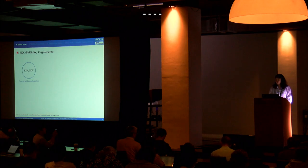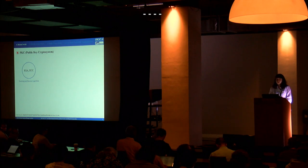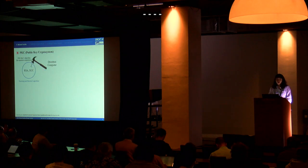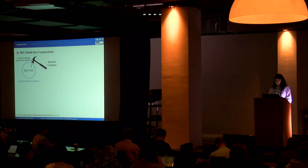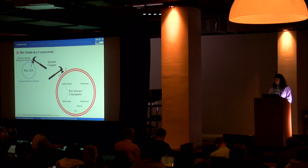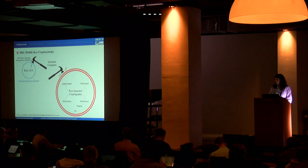The security of public cryptosystems is primarily based on the difficulty of number theory problems, such as factoring large integers or finding discrete logarithms. However, Shor proposed an algorithm that can solve such problems in polynomial time, given a practical large-scale quantum computer. Since quantum computers become critical threats to current cryptosystems, there are increasing needs for post-quantum cryptography secure against both quantum and classical computers. Therefore, lattice-based, multivariate, hash-based, and code-based cryptography schemes are mainly under study.